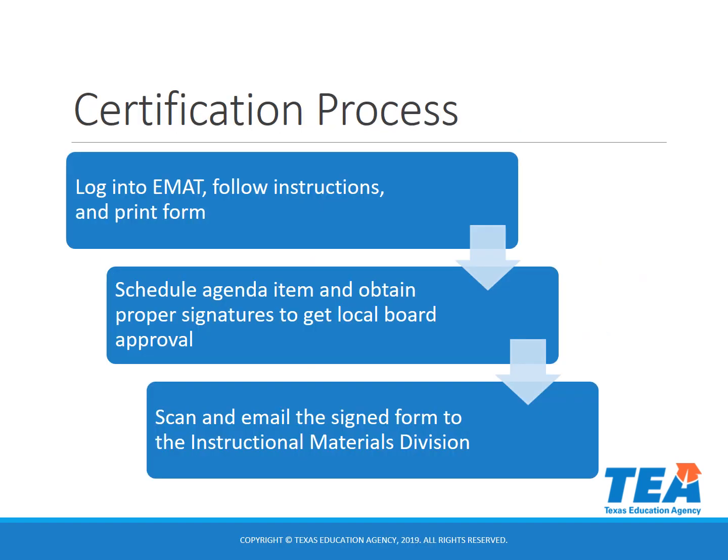The certification process consists of three easy steps. First, you will log into the EMAT system and fill out the allotment antiques certification. Secondly, you will take it to your local board for approval. Once you have obtained all proper signatures, you will then scan and email the signed form to the Instructional Materials Division.